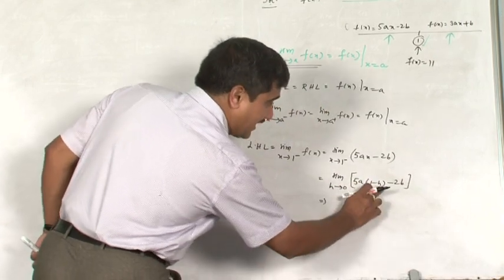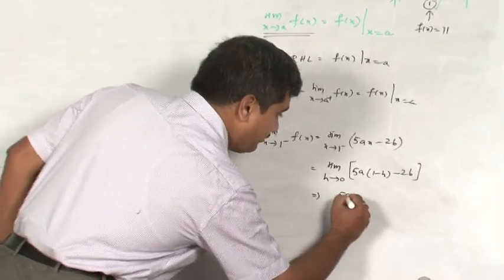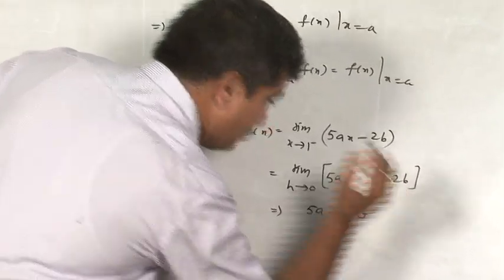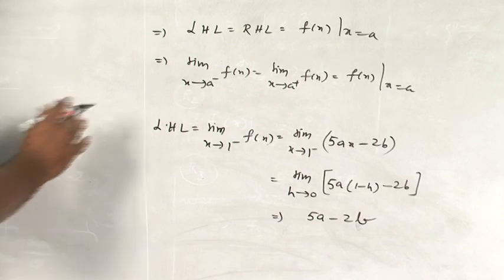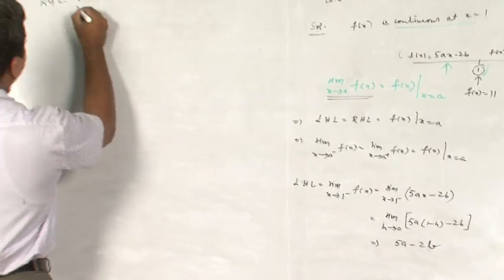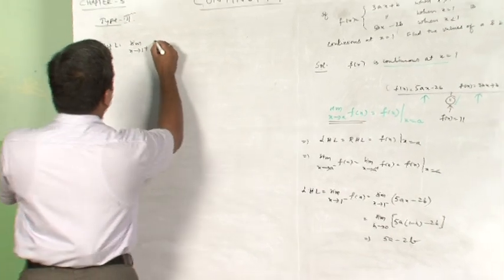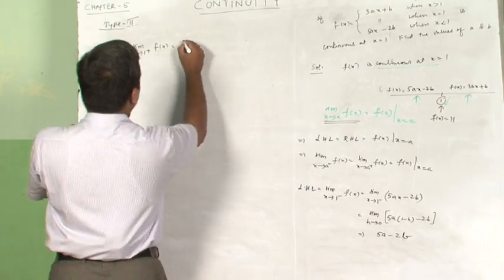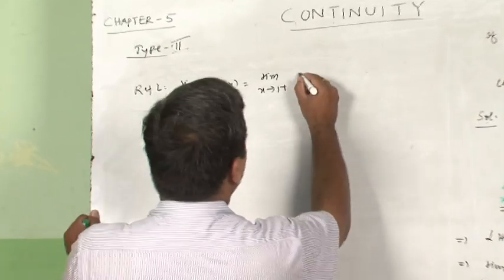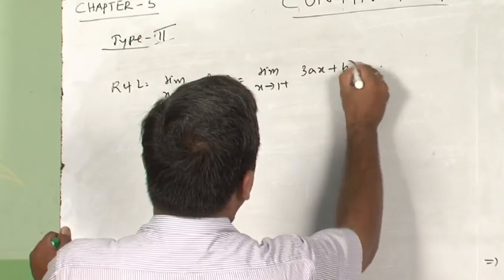Resulting put h is equal to directly 0, it is going to be 5A minus 2B. This is LHL. And RHL, I am going to calculate limit x tends to 1 plus f of x, that is equal to limit x tends to 1 plus, f of x is 3Ax plus B on the right side.